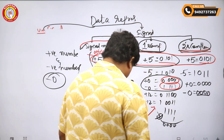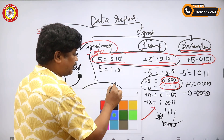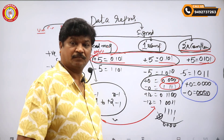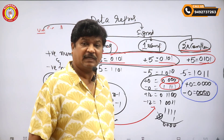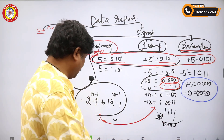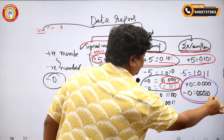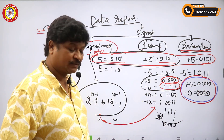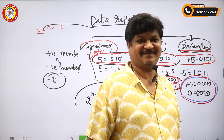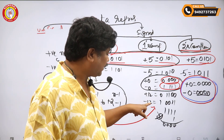This is a very important highlight point: the positive zero and negative zero are the same — both give 0000. Therefore, there is no negative zero in two's complement data representation. That is one of the biggest advantages.